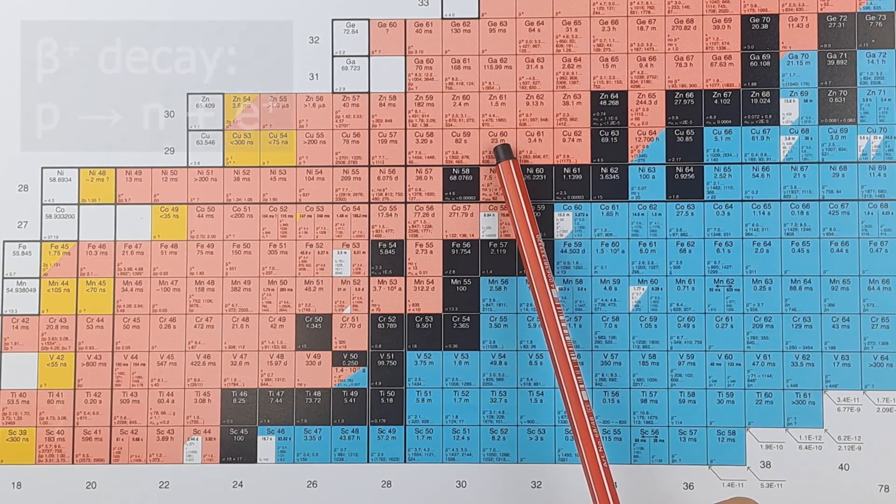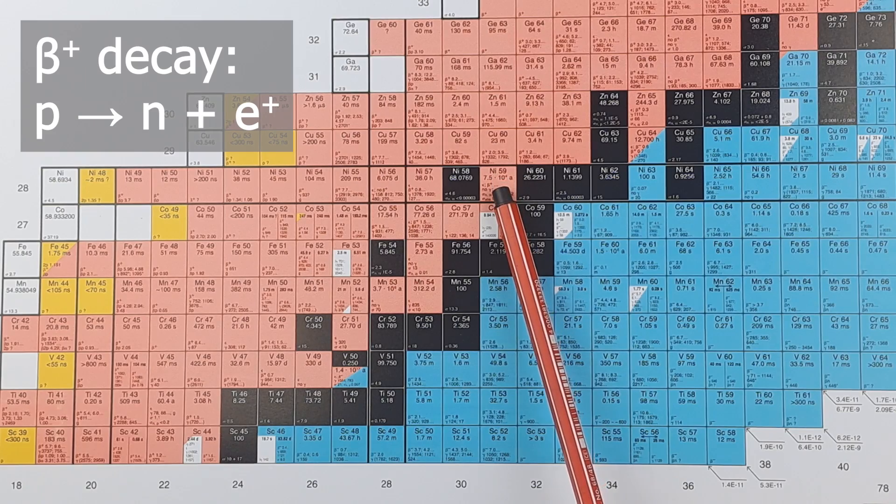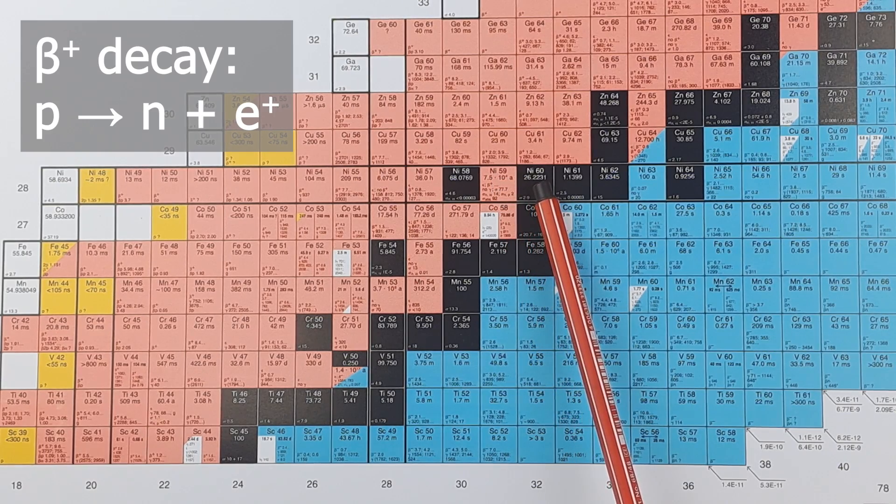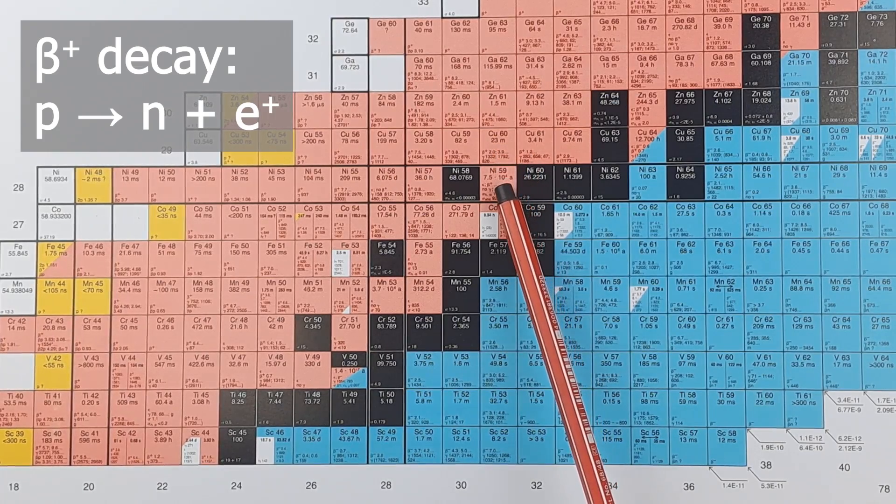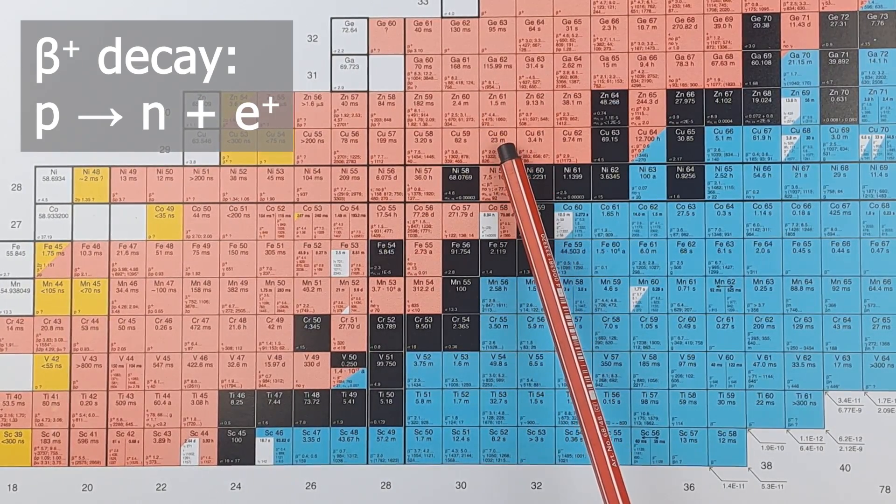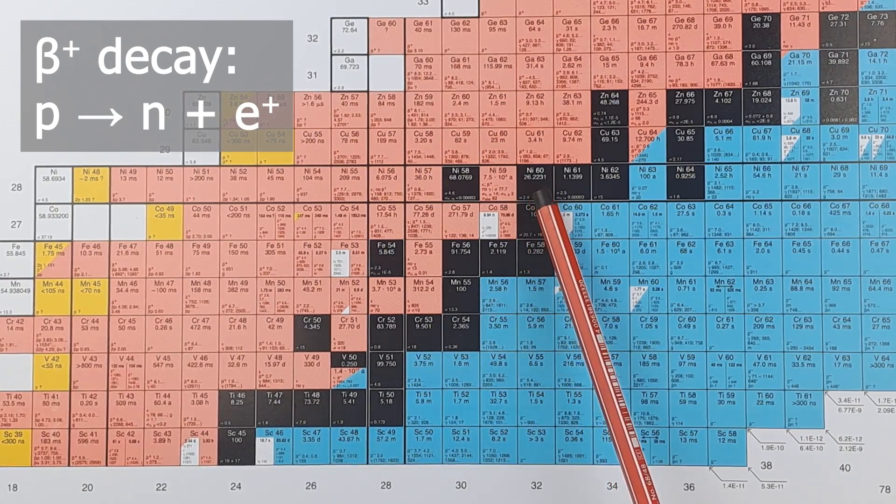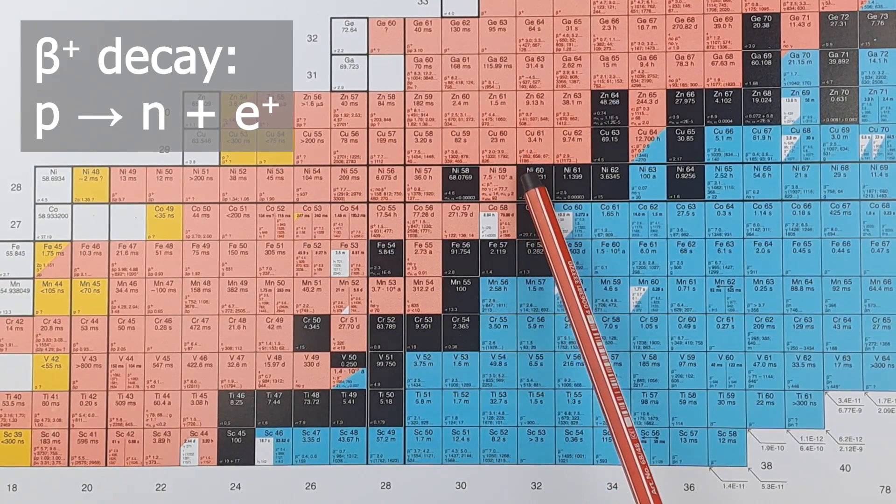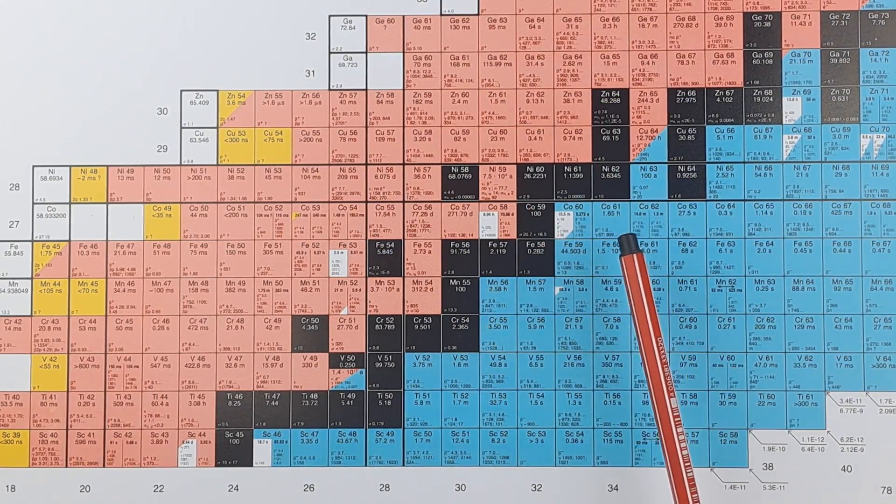The ones marked in red are the ones that undergo beta plus decay or electron capture. Just as a quick reminder, in the beta plus decay, a proton turns into a neutron and a positron is emitted. So, the proton number decreases and the neutron number increases. Therefore, during a beta plus decay, you move diagonally downwards and to the right through the Chart of Nuclides.